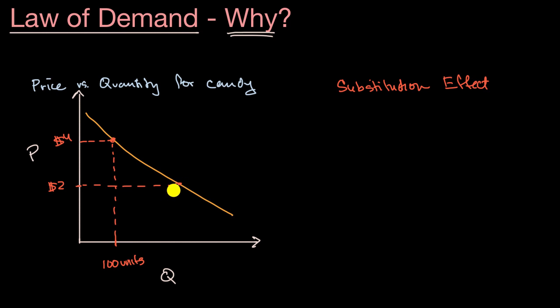So some of that quantity of fruit people would have bought, they'll say, hey, now candy is a better deal, I'm going to substitute the fruit with candy. And so that's why you have a higher quantity of candy demanded. This might maybe be now 250 units.